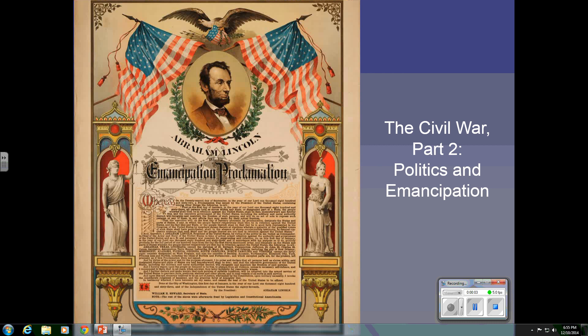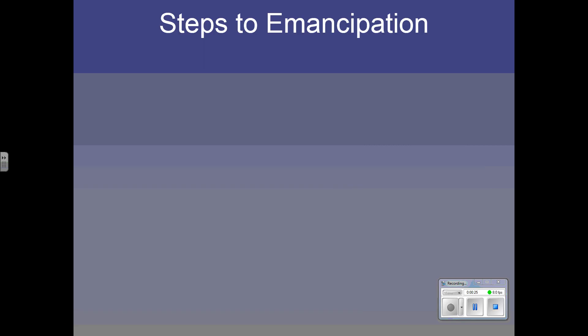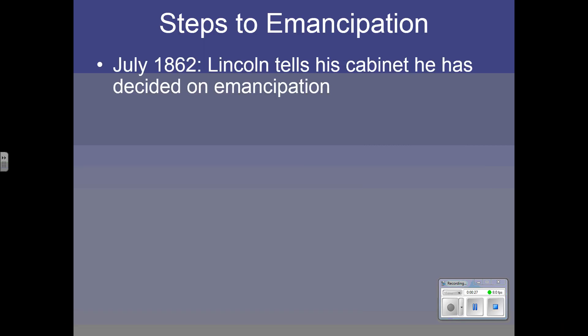This is part two of the presentation on the Civil War, and this one is going to focus on the process of emancipation, of freeing the slaves. You see an image here of the Emancipation Proclamation, issued by Abraham Lincoln on New Year's Day, 1863. But there's a lot behind this story, and it's very interesting. Let's look at some of the steps that were taken before he issued this proclamation.